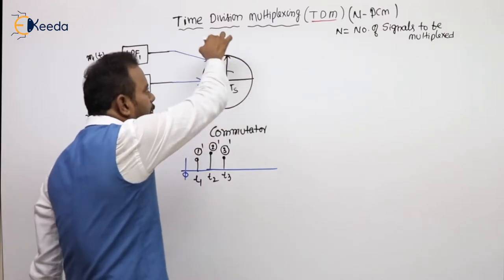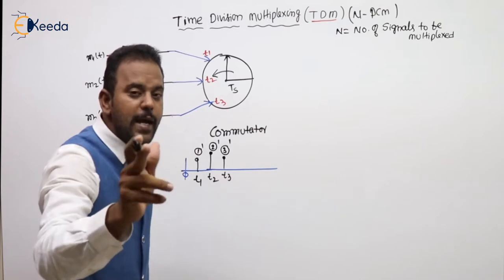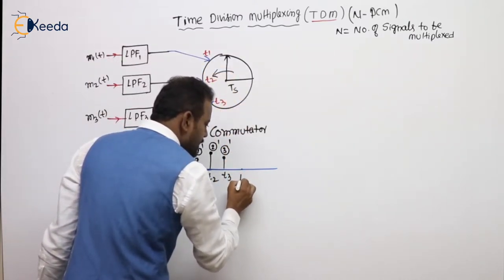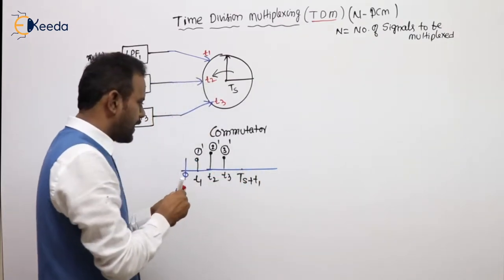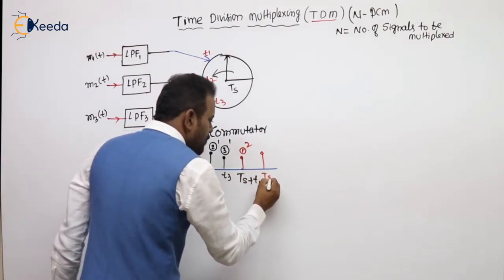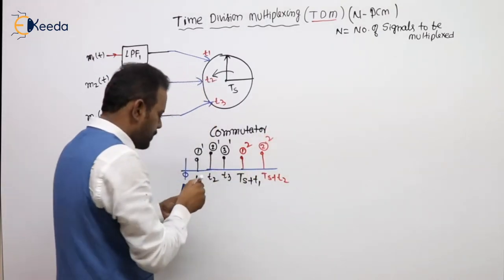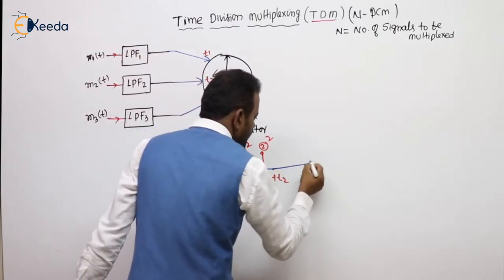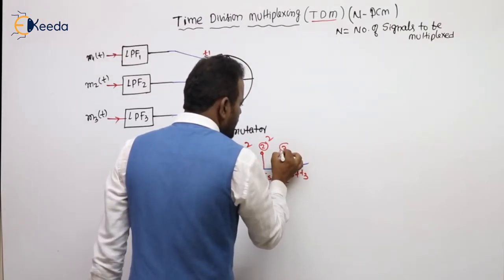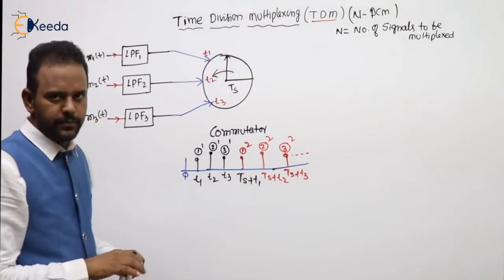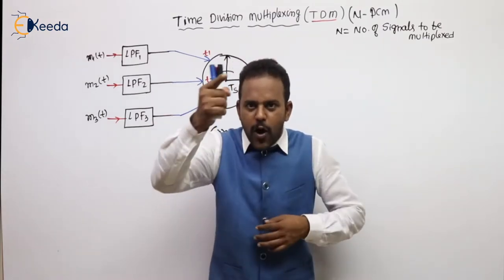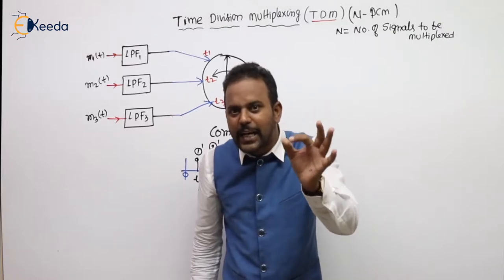It completes one rotation. The second sample of the first message comes when the commutator completes one rotation of Ts time and comes to the first message one more time — at Ts plus T1. At Ts plus T2 we get the second message's second sample. At Ts plus T3 we get the third message's second sample, and so on. The name itself is time division — meaning the total commutator time is going to be divided between each and every message.